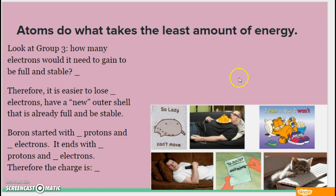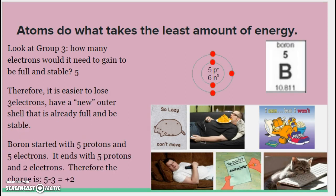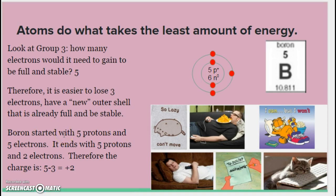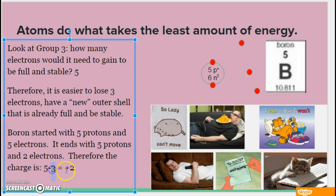Alright, see if you can fill in this whole table. If you notice, I did not include a Bohr diagram for you, because you have a Bohr diagram. So, hit pause, actually go through and do it. Alright, here are the answers. It would need to gain 5 electrons. It's not going to do that. That's a lot of work. Therefore, it is easier to lose 3 electrons and have a new outer shell that's already full and stable. Boron started with 5 protons and 5 electrons. It ends with 5 protons and, yes, you have to make those sound effects. It ends with 2 electrons. Therefore, 5 minus 2 is positive 3. Careful, don't go too fast. Sometimes even I go too fast. So, 2 electrons, a charge of positive 3.